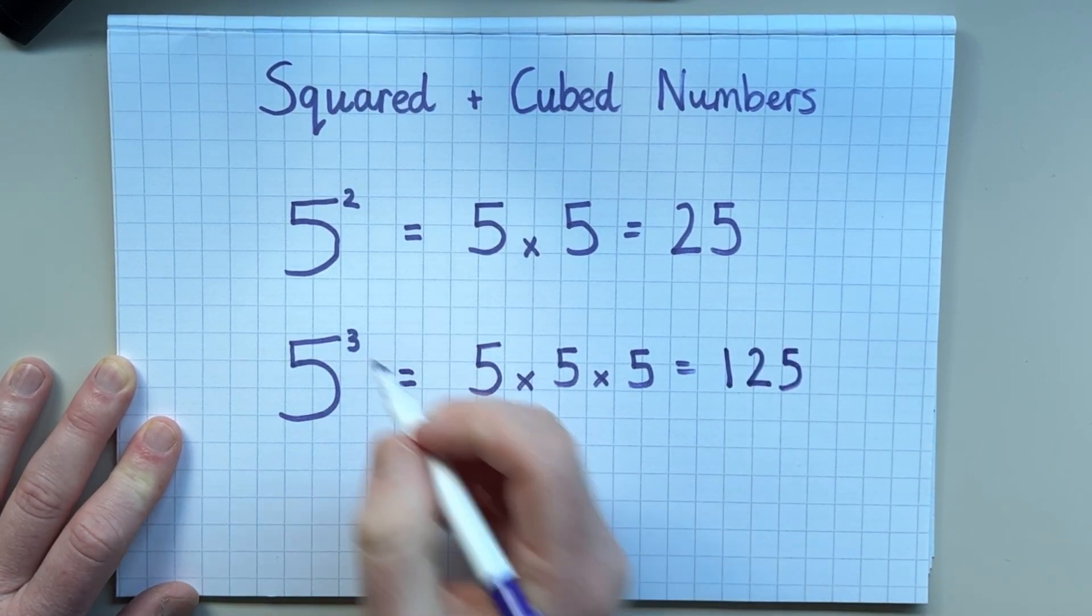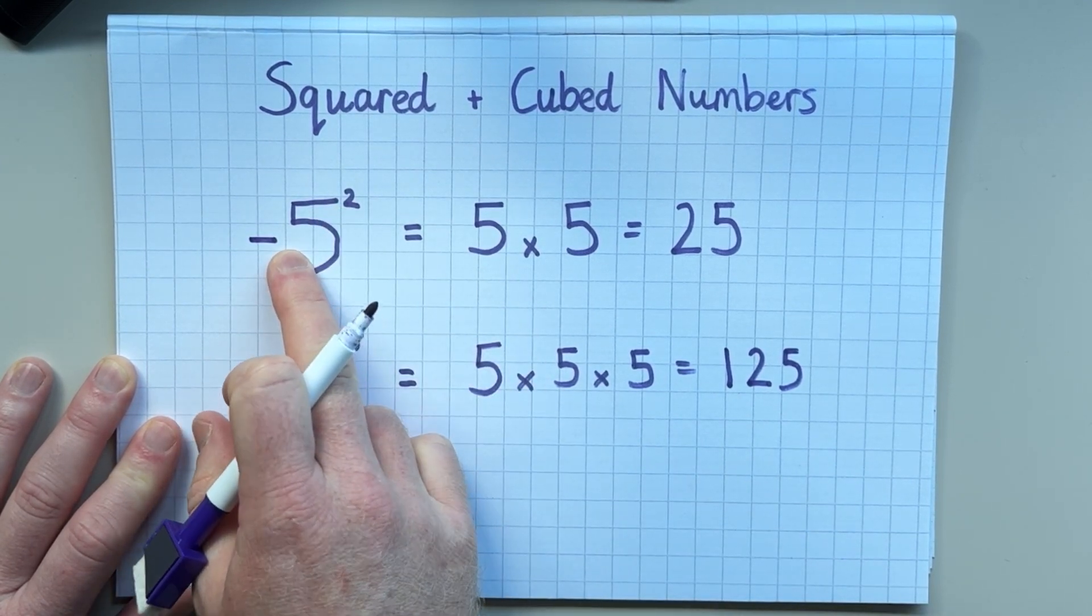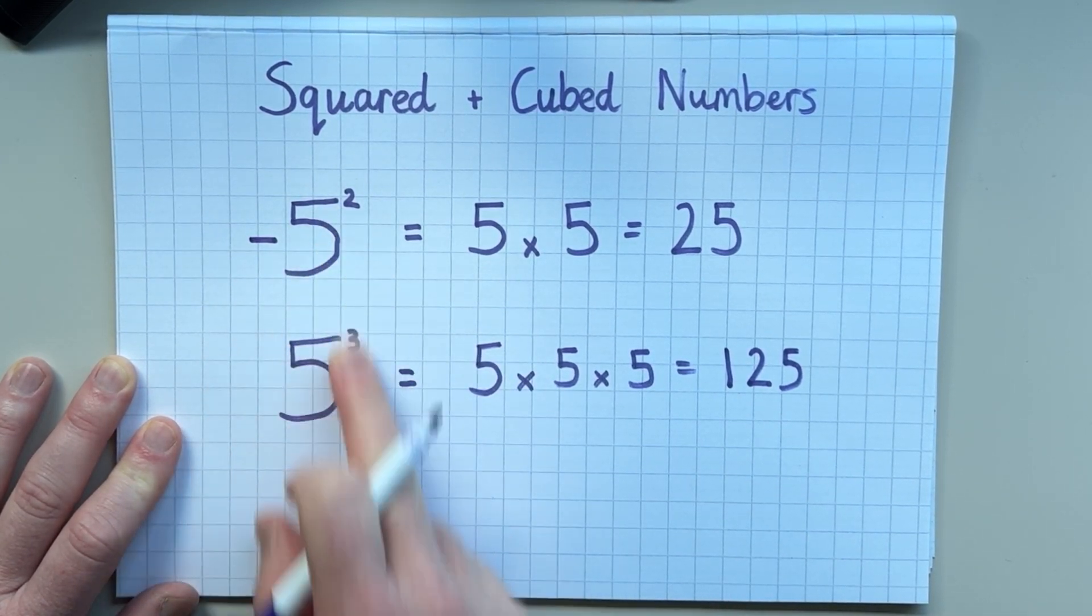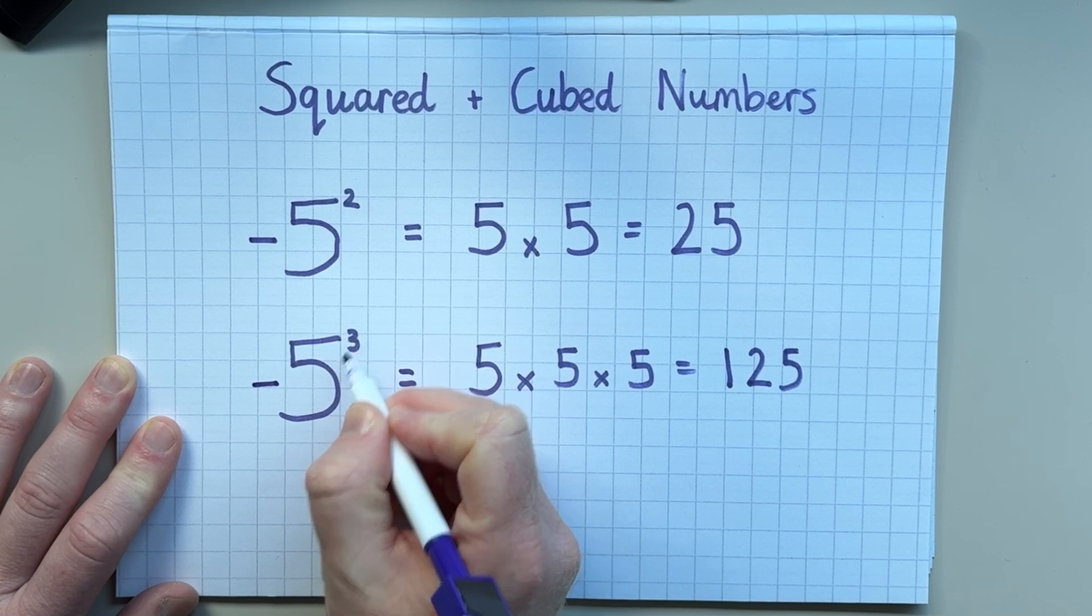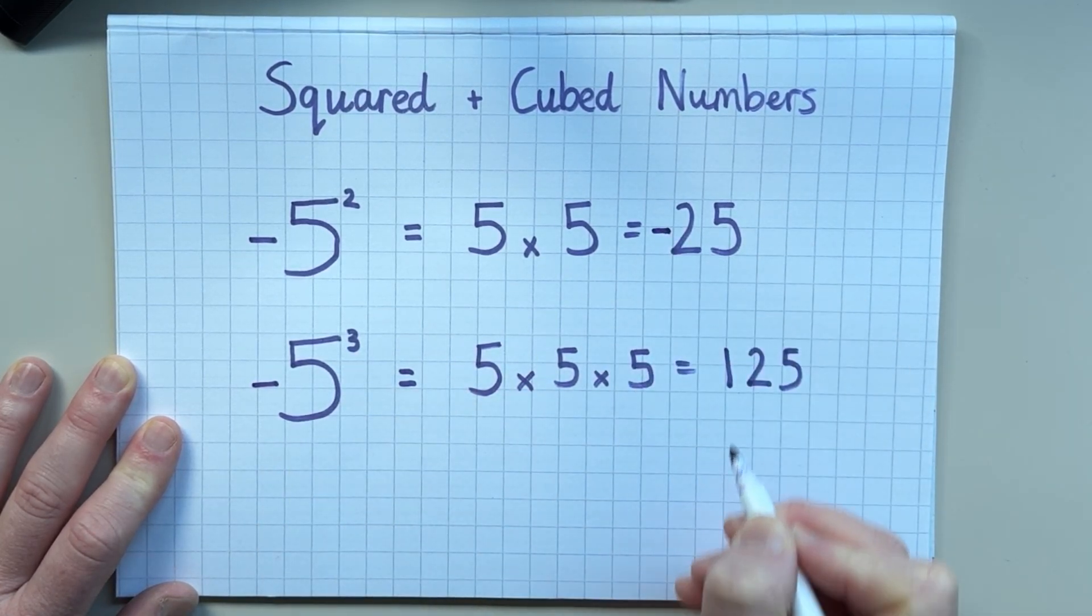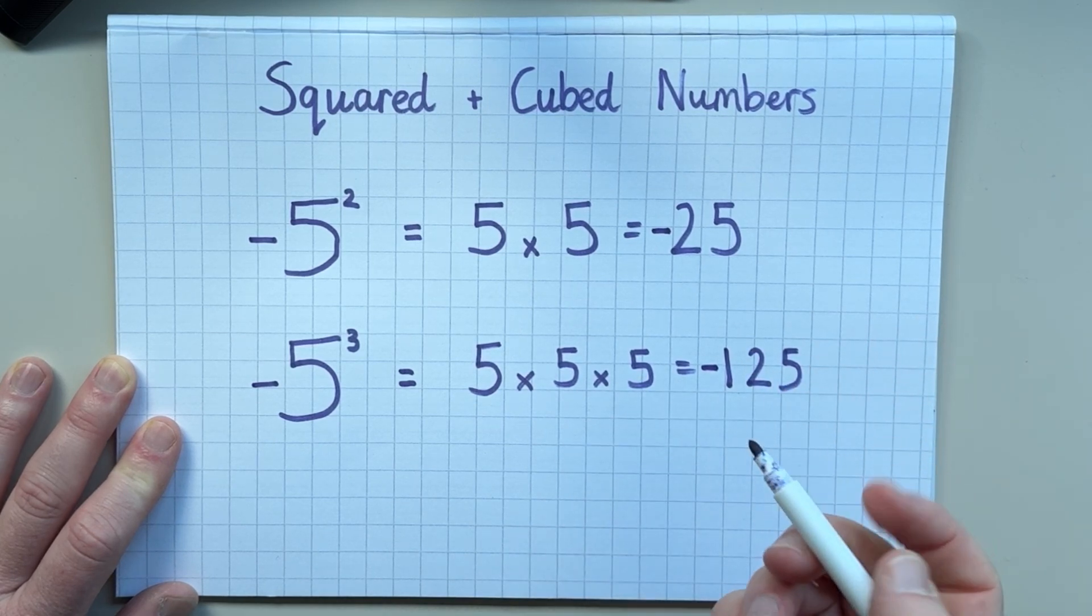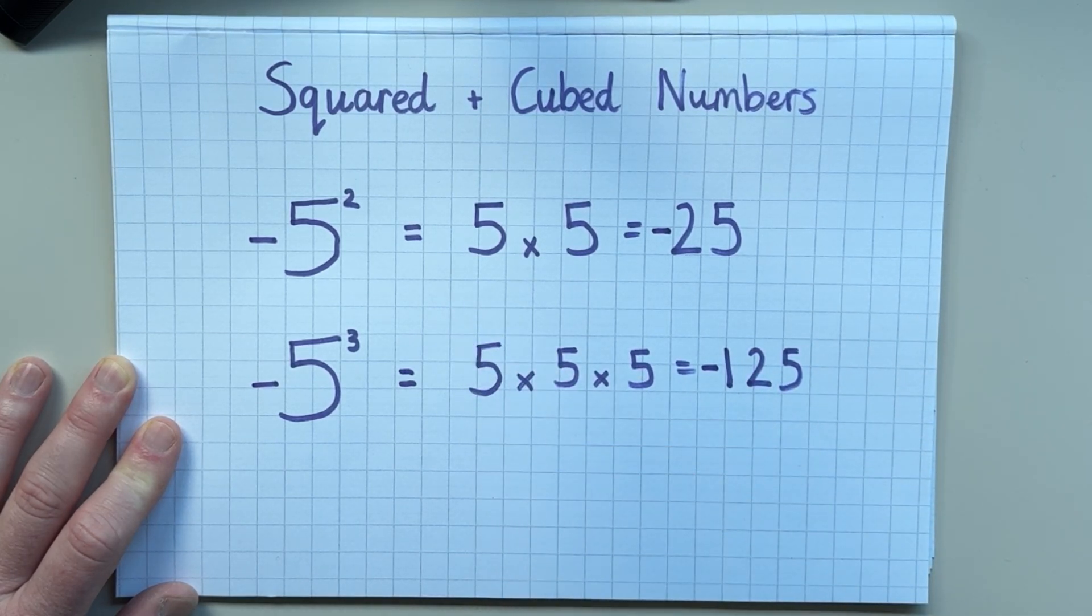But what happens if we try to square a negative number? Or if we try to cube a negative number? Do we simply just add a negative sign to the answers? And are they the same? In this video, that's exactly what we're going to investigate. And hopefully, you're going to learn something.